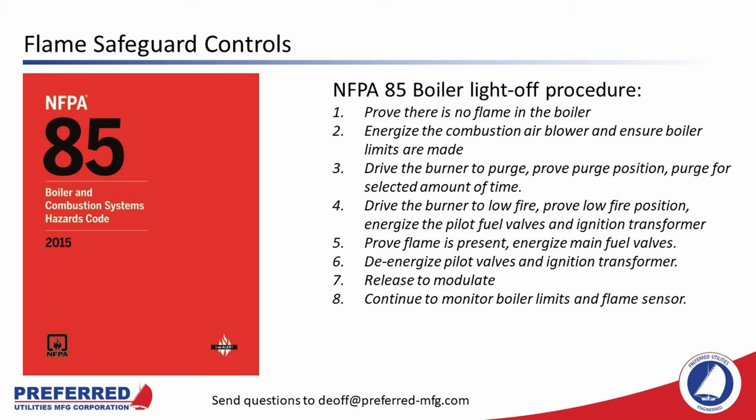Some modern flame safeguard controls include a function called early spark termination. The controller energizes the pilot valves and ignition transformer to light the pilot, then after five seconds de-energizes the ignition transformer and uses the flame scanner to ensure the flame is still lit without the ignition transformer. Ultraviolet scanners can sometimes see the igniter spark and not the pilot flame, which could cause the flame safeguard controller to open the main fuel valves without a pilot flame present — which could be dangerous. By terminating the spark early, the flame scanner can only be satisfied by a real pilot flame.